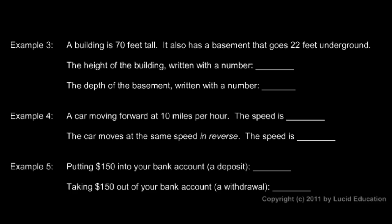Example three. A building is 70 feet tall. That's 70 feet above the ground. It also has a basement that goes 22 feet underground. The height of the building could be written as 70 feet. The depth of the basement written with a number might be negative 22 feet. If we're thinking a positive number indicates up above the ground, then we would use a negative number to indicate down, going down below the ground.